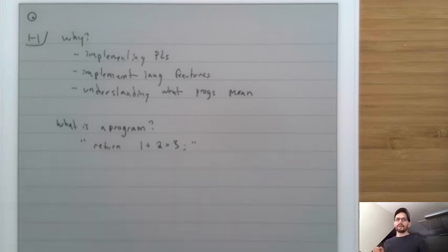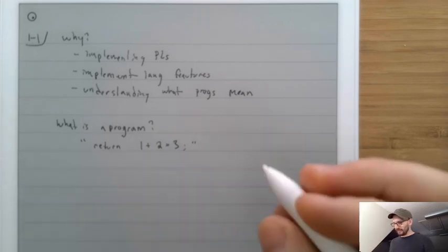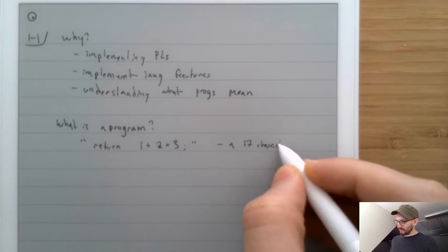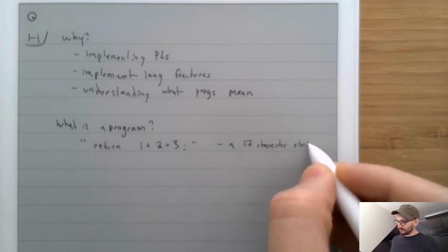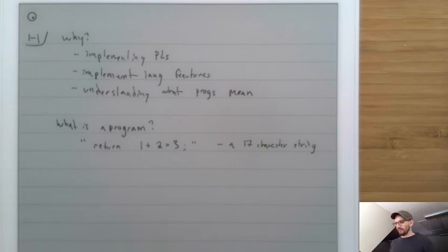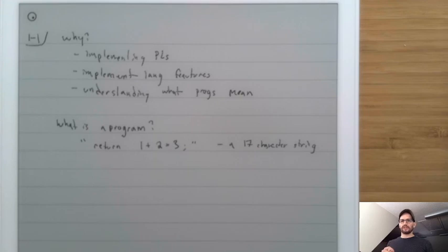We could say that this program has 17 pieces — it's a 17-character string. This is certainly the way that many programming language tools think about programs. For example, when you use Emacs, Vim, or Ed and you're modifying a program, you're modifying that program as a string.